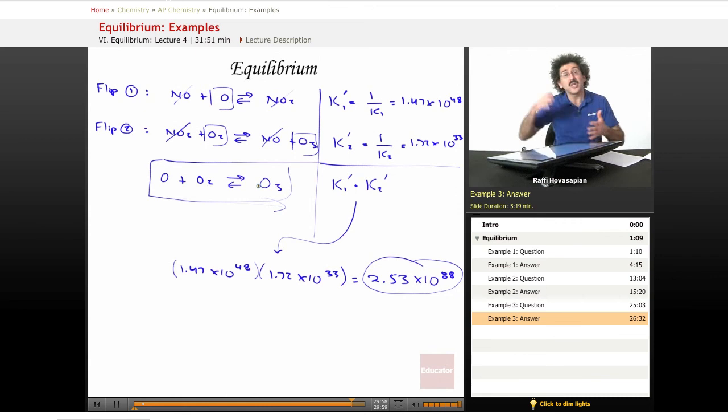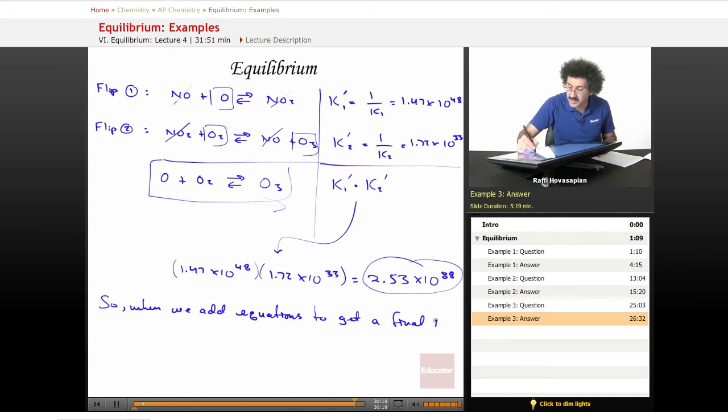You multiply the equilibrium constants for all of the individual equations. So when we add equations to get a final net equation, our final K is equal to K1 times K2 times K3, all the way to KN if we had N equations. And that's it.